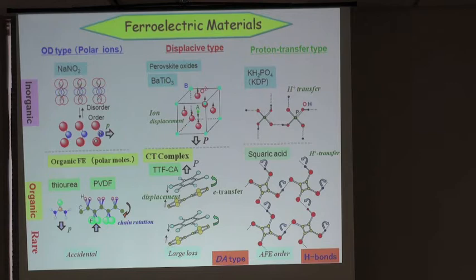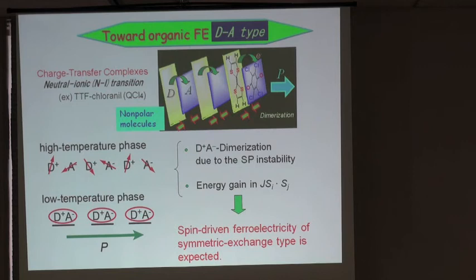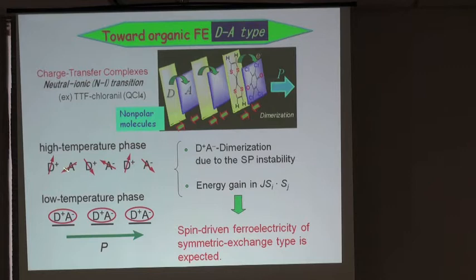Let me start with displacement-type organic molecular ferroelectrics. These are composed of donor and acceptor molecules. Usually the D+A− or A−D+ local dipoles cancel out in the solid. Importantly, these are all pi molecules, so if ionized they host spin-1/2 radicals. The pi orbital is strongly overlapped along the one-dimensional direction, so the system is essentially a Mott insulator or a one-dimensional Heisenberg spin chain.